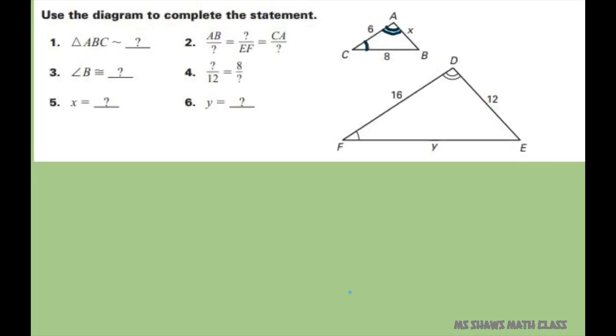So since they're going A, B, C, you're going to go D, E, F because the angles match up. So that's going to be triangle D, E, F.